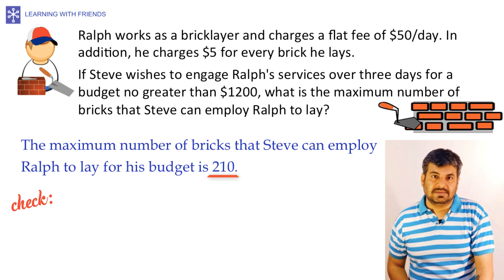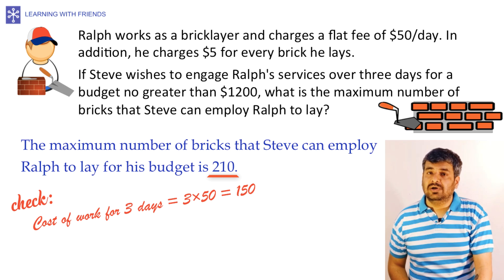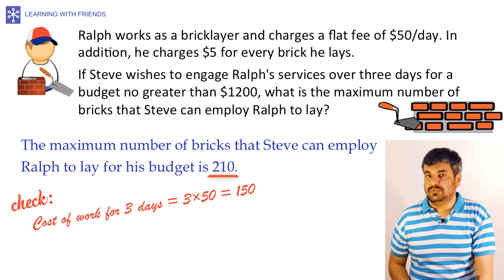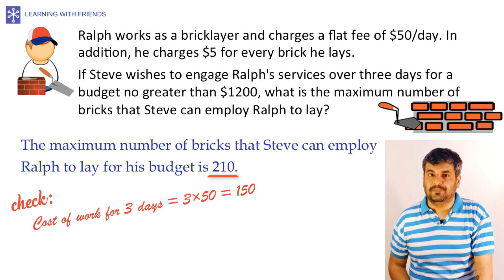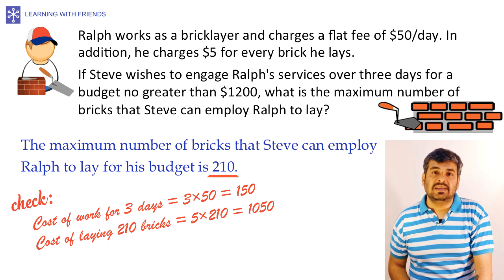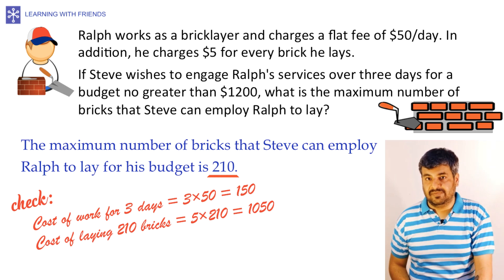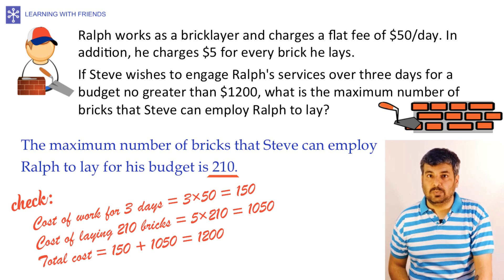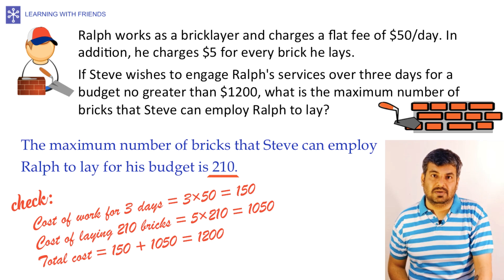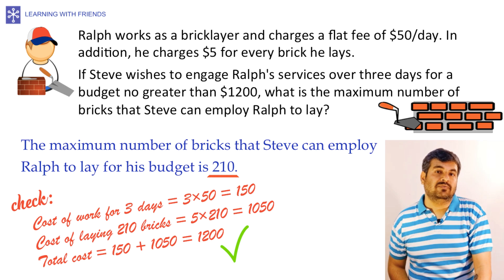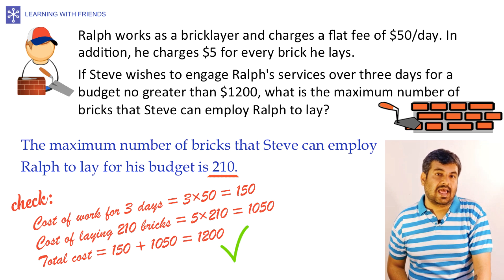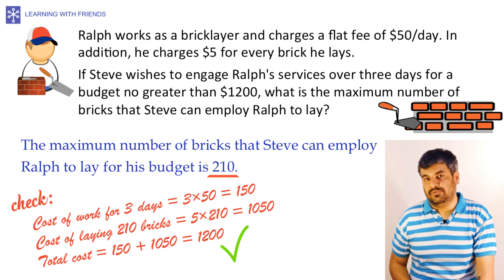Let's do a quick check of our answer. The cost of work for 3 days was 3 x 50, which is 150. And the cost of laying 210 bricks would be 5 x 210, which is 1050. Therefore the total cost becomes 150 plus 1050, or 1200. That is exactly the amount of money that Steve can contribute towards this project. And therefore, we have got the right number of bricks.